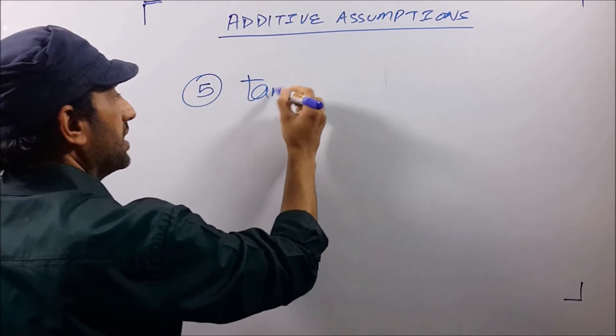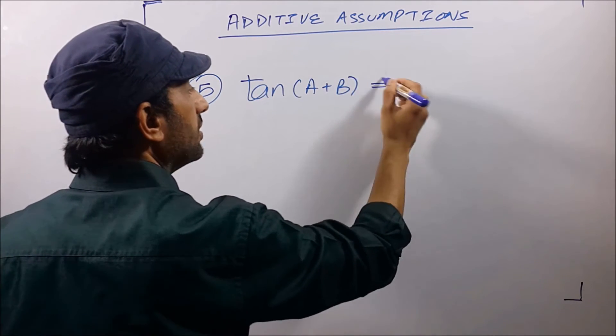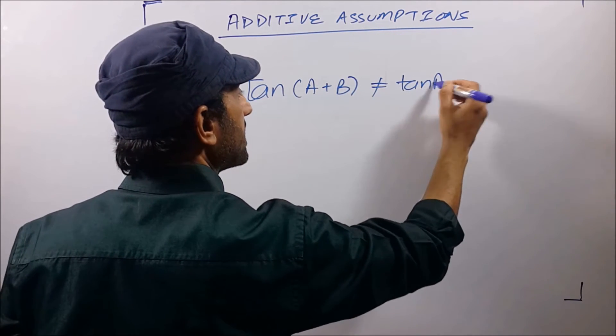The fifth is on trigonometry. tan(a+b) is not equal to tan(a) + tan(b).